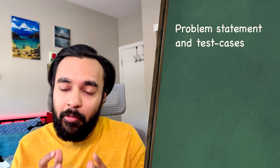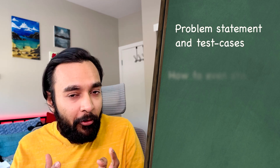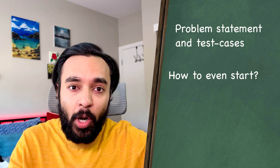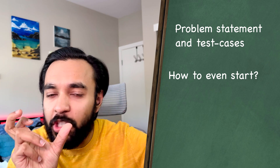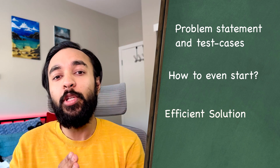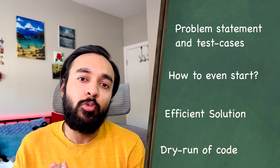I will explain the problem statement and we'll look at a sample test case. Going forward, we will see how you even begin to attempt this problem and what you do with these two traversal techniques — how do you combine them and find a unique tree? Once you understand the concept, we will also do a dry run of the code so that you can understand how all of this is actually working in action.